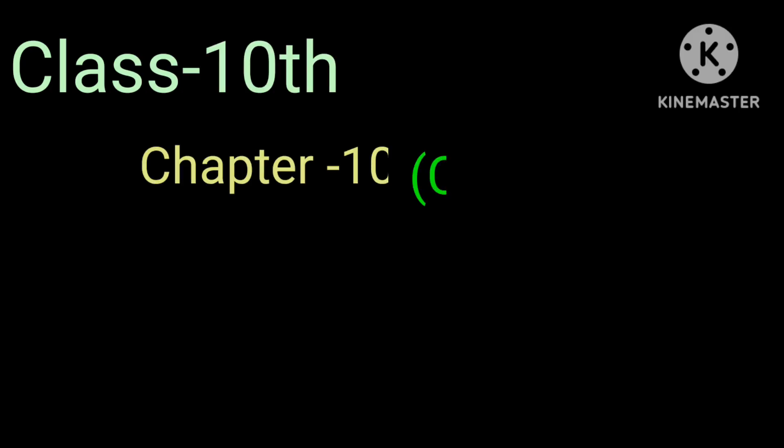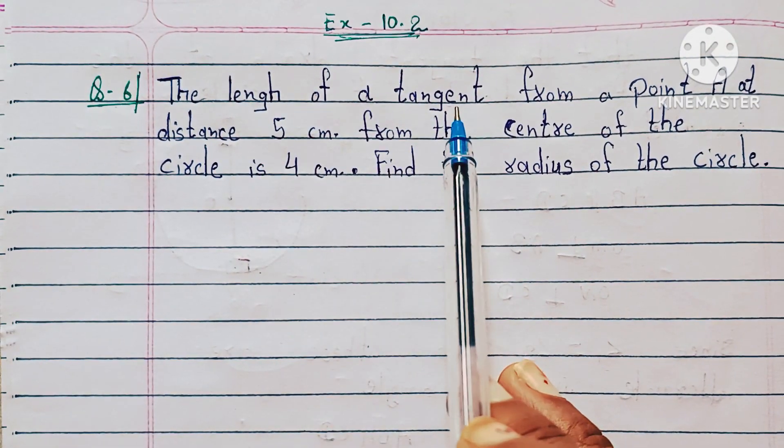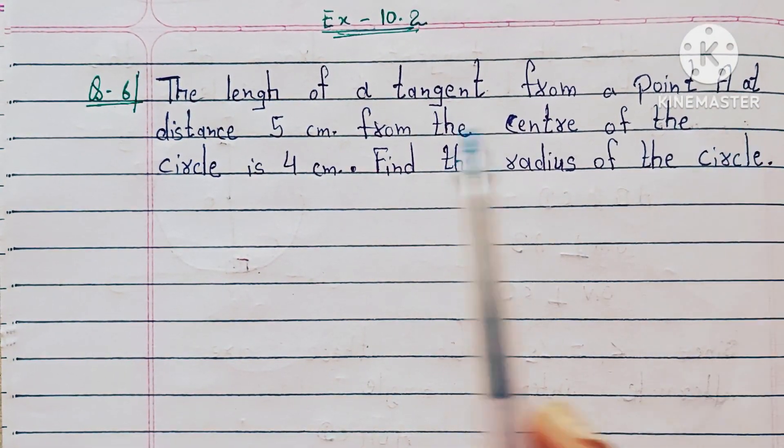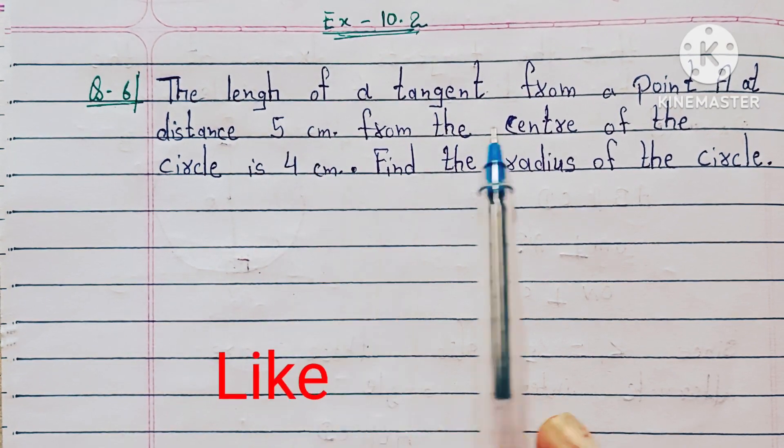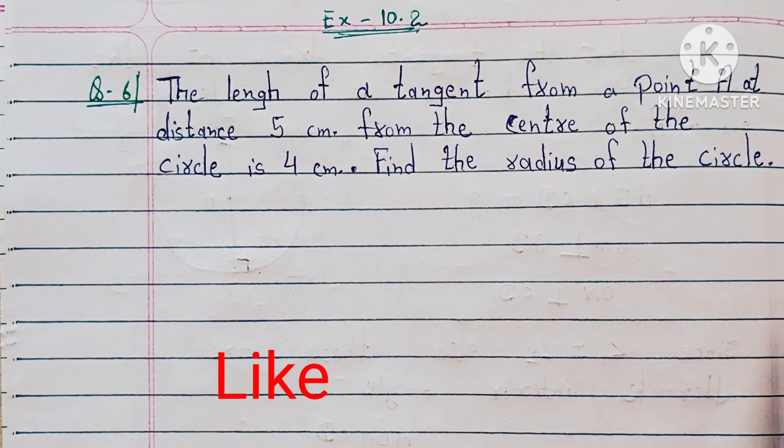We are going to learn question 6 of exercise 10.2. Question 6 is: the length of a tangent from a point A at distance 5 cm from the center of the circle is 4 cm. Find the radius of the circle.